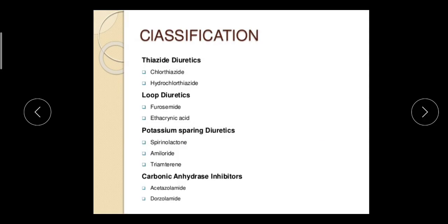The next part is the classification of diuretics. They are classified mainly into five classes: (1) thiazide diuretics — e.g., chlorothiazide, hydrochlorothiazide; (2) loop diuretics — e.g., furosemide, ethacrynic acid; (3) potassium-sparing diuretics — e.g., spironolactone, amiloride; (4) carbonic anhydrase inhibitors — e.g., acetazolamide, methazolamide; and (5) osmotic diuretics — e.g., mannitol. We will now see each class one by one.